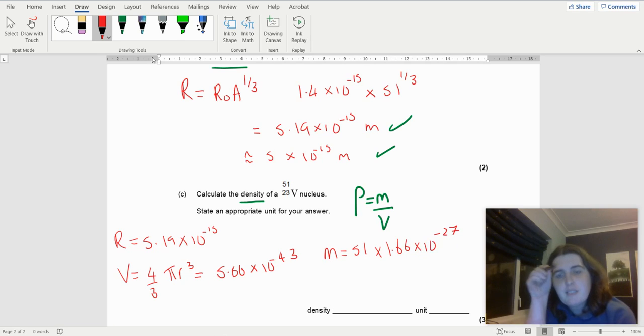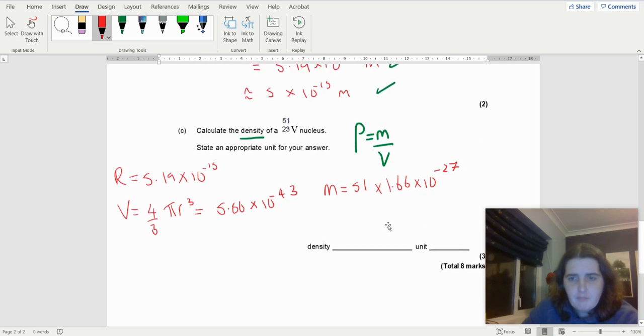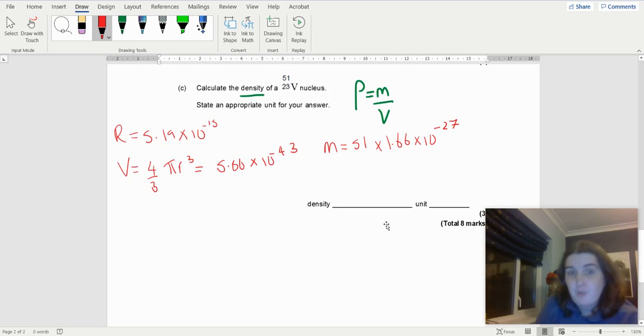Now, you could use 1.667 or 1.6753 for the mass of a nucleon. But at this level, it doesn't really matter. So I'm obviously just working out the density here.